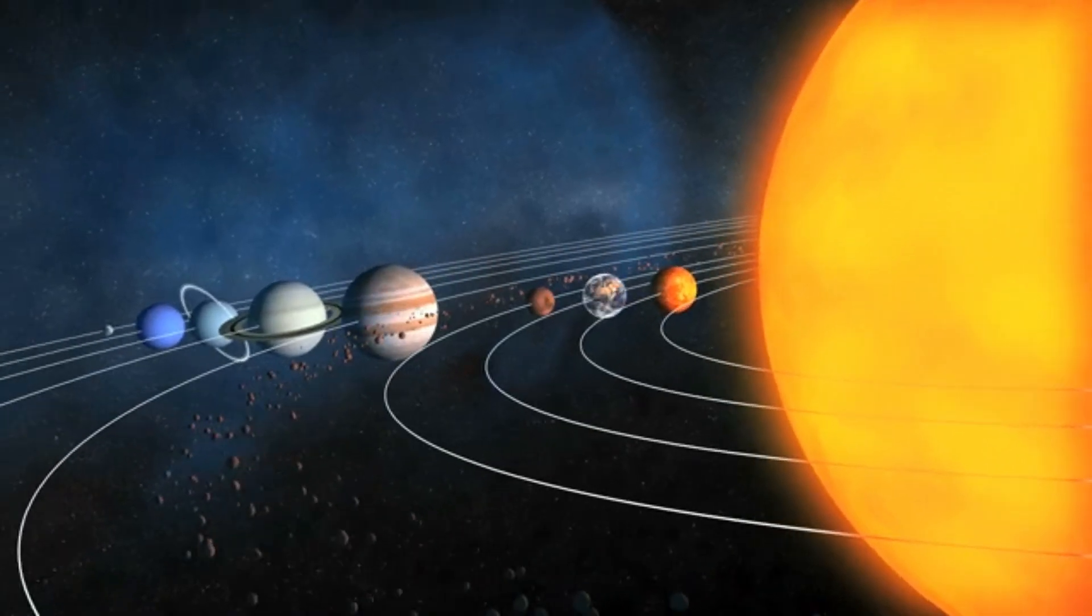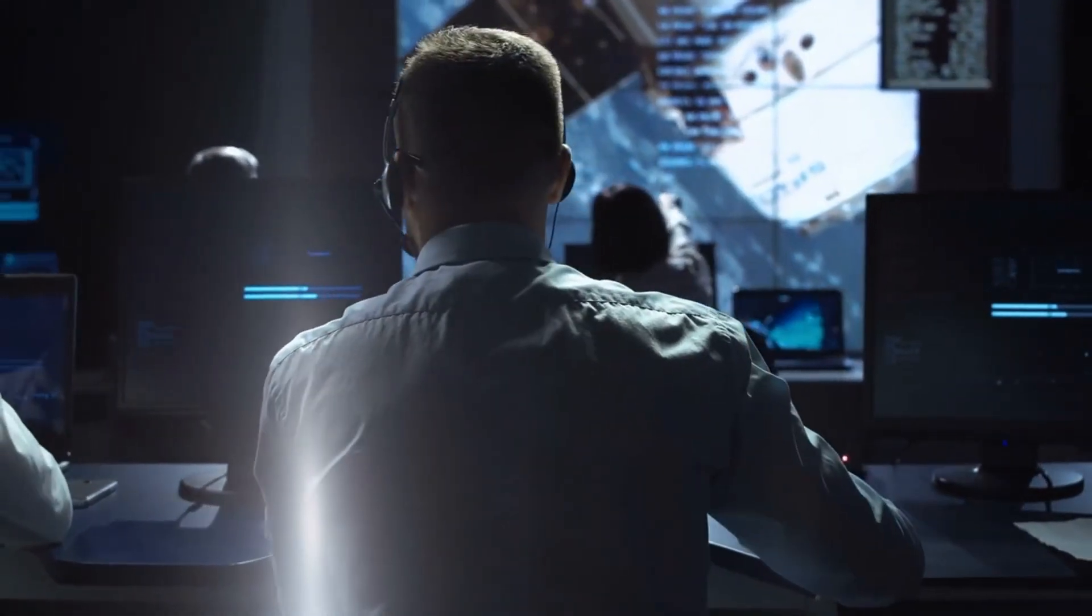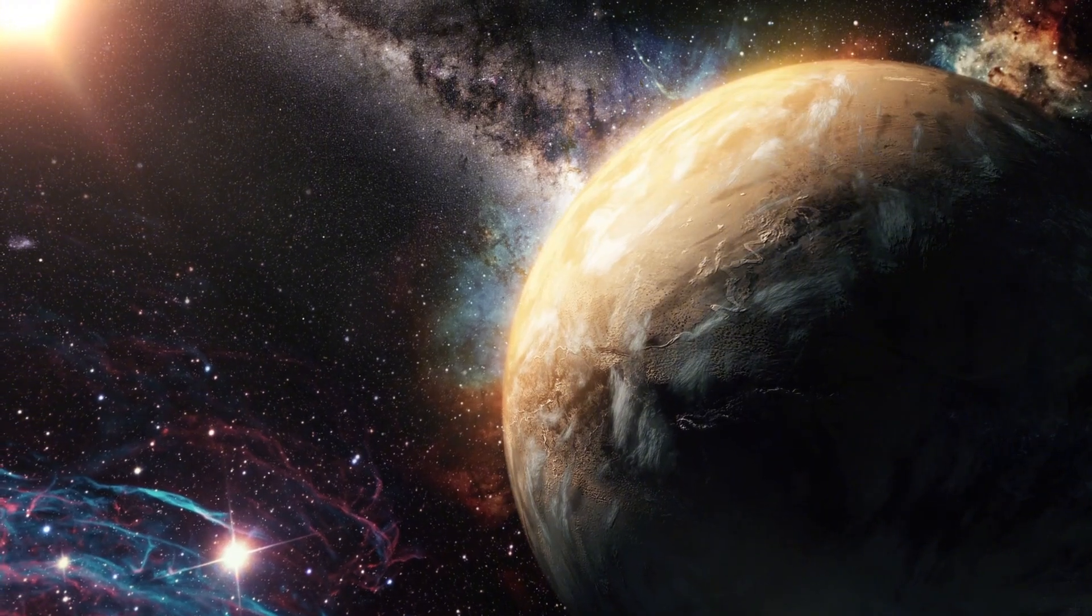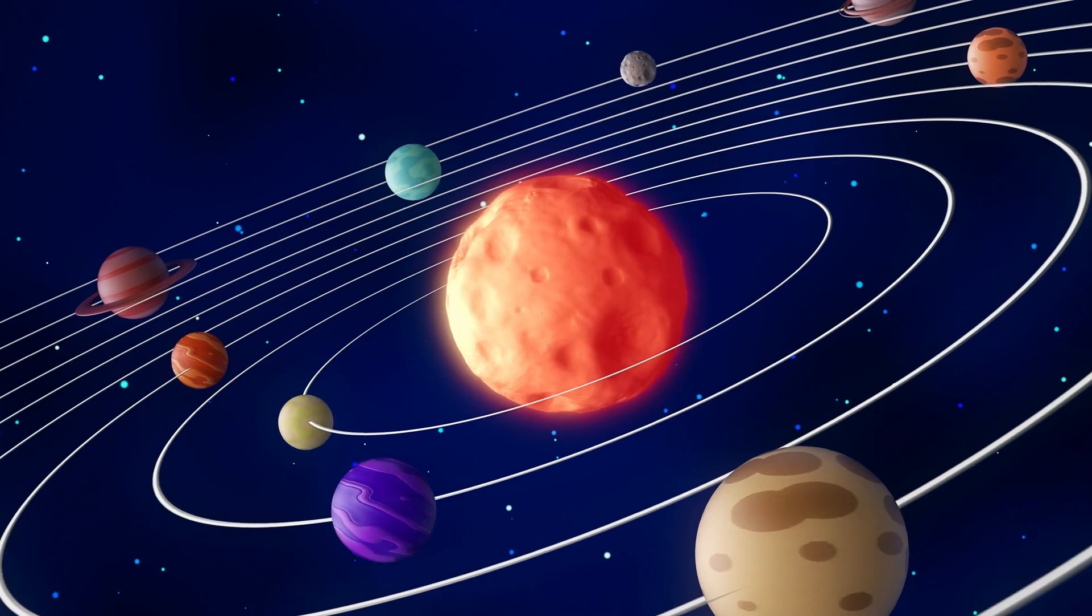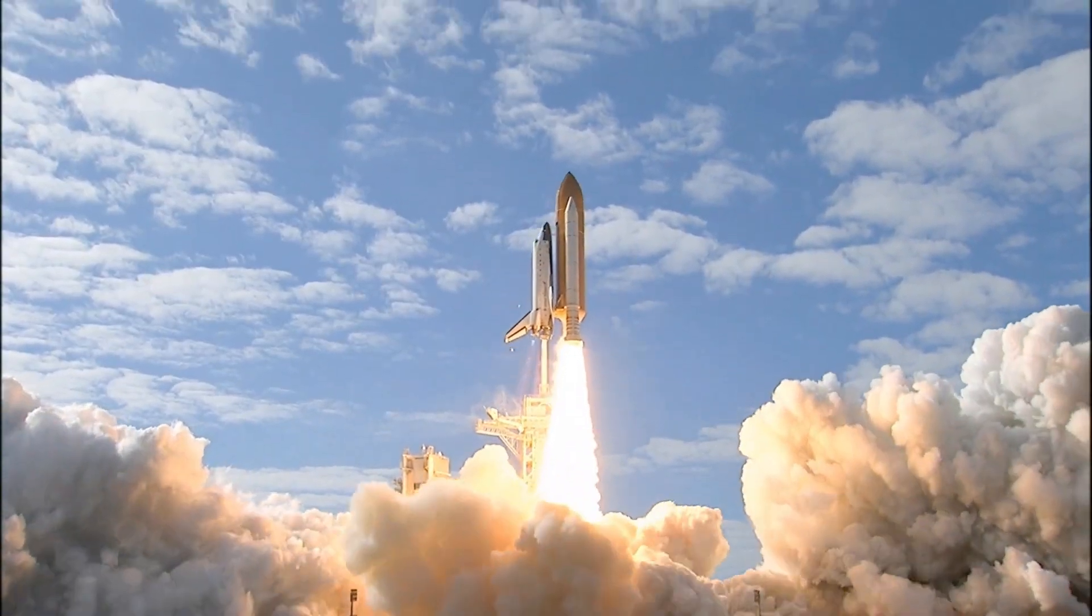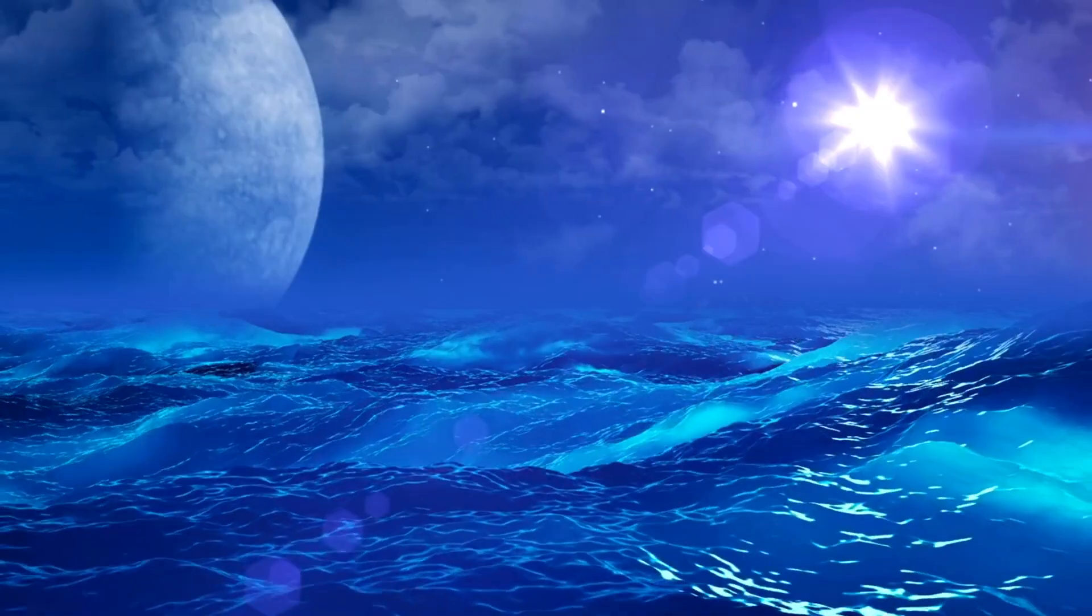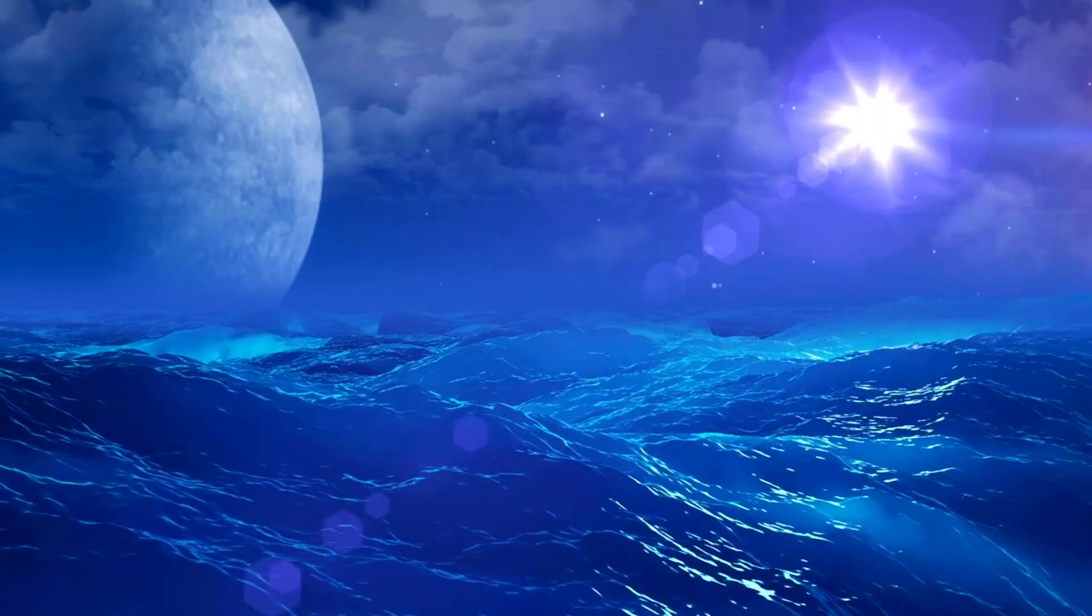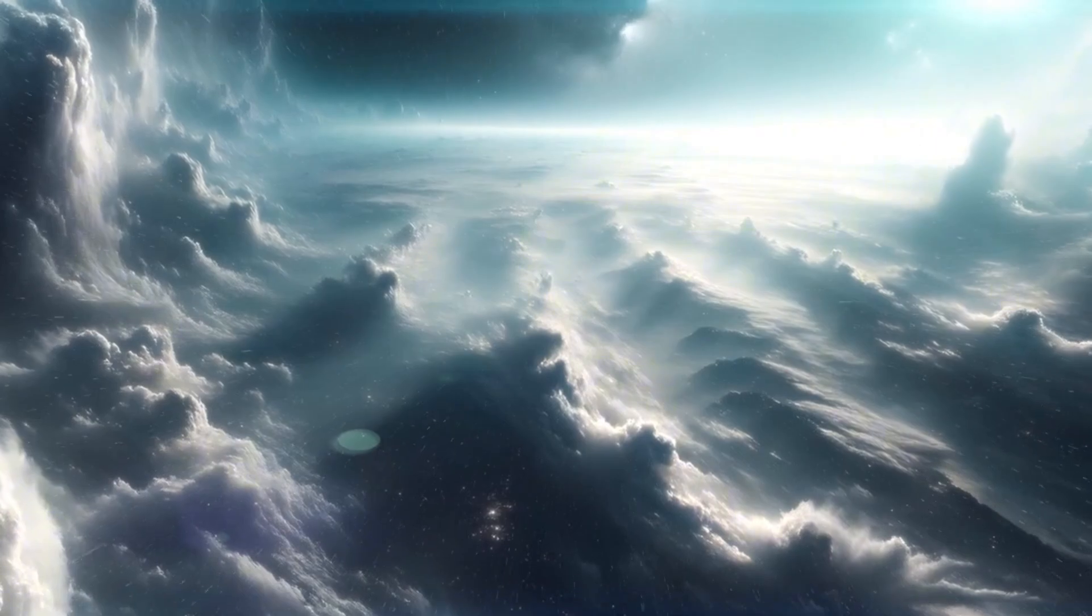Exoplanetary systems. NASA's pursuit of exoplanets through missions like Kepler and TESS has revolutionized our understanding of planetary diversity and potential habitability beyond our solar system. Kepler, launched in 2009, identified over 2,800 exoplanets by observing starlight dips caused by planetary transits ranging from rocky to gas giants.